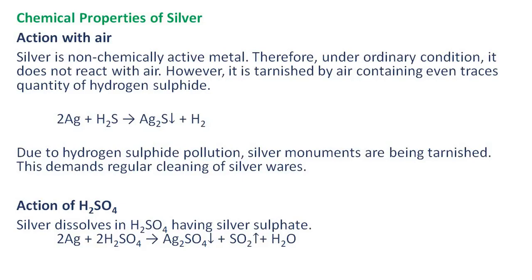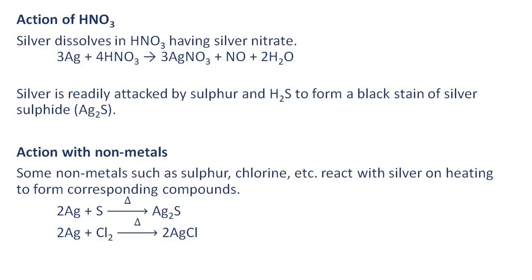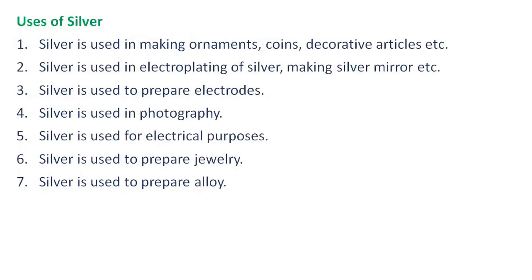Action of sulfuric acid: Silver dissolves in sulfuric acid forming silver sulfate. Action of nitric acid: Silver dissolves in nitric acid forming silver nitrate. Silver is readily attacked by sulfur and hydrogen sulfide to form a black stain of silver sulfide (Ag₂S). Action with non-metals: Some non-metals such as sulfur, chlorine, etc., react with silver on heating to form corresponding compounds.